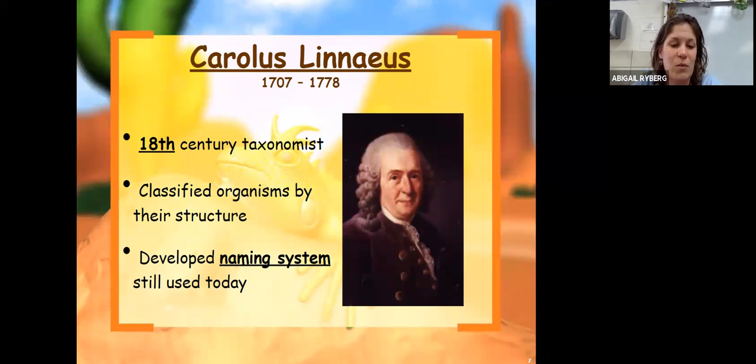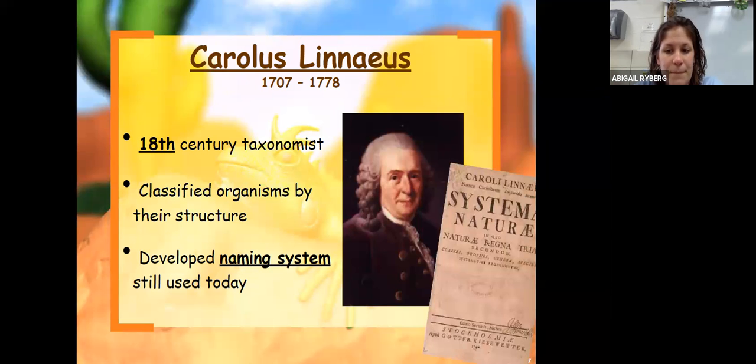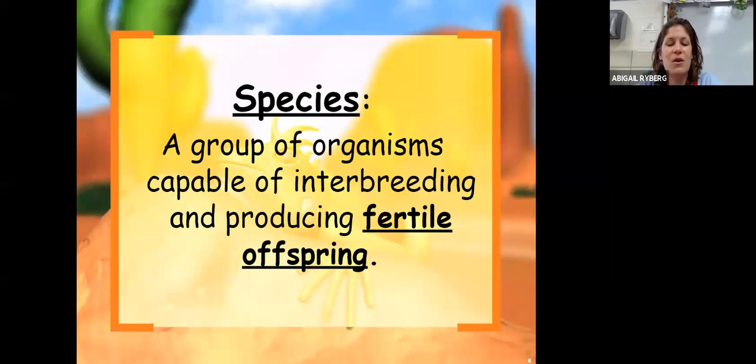In fact, his system is still what we use today. So the term species is a group of organisms that are capable of interbreeding and producing fertile offspring. That's the key. When you're looking at beetles or ants in your backyard, there's probably multiple species.